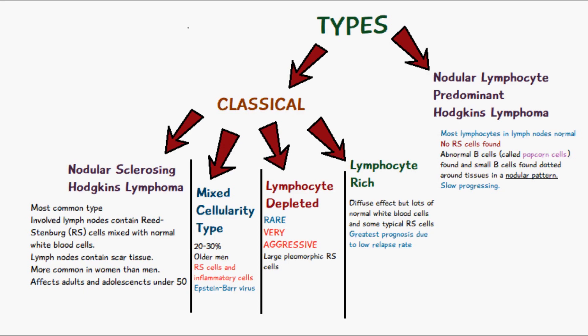The nodular lymphocyte predominant Hodgkin's lymphoma is another type. Here there aren't any Reed-Sternberg cells present, but there are other abnormal B cells called popcorn cells, as well as small B cells found dotted around tissues in a nodular pattern.